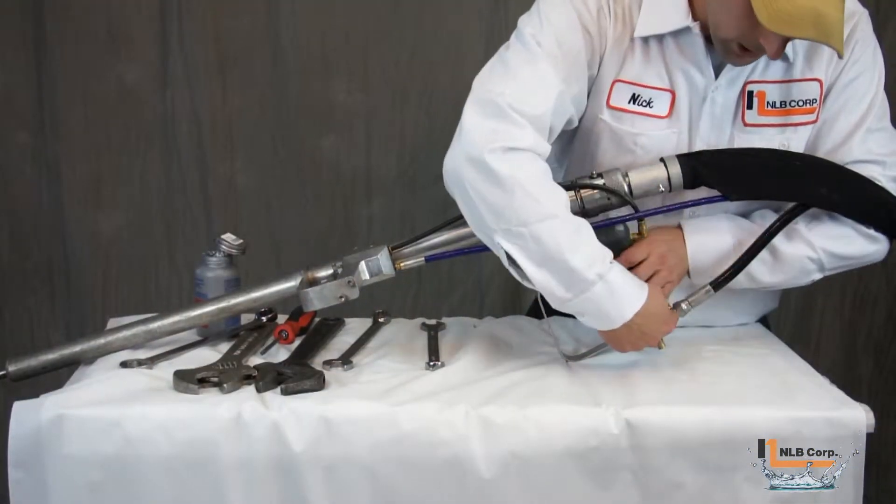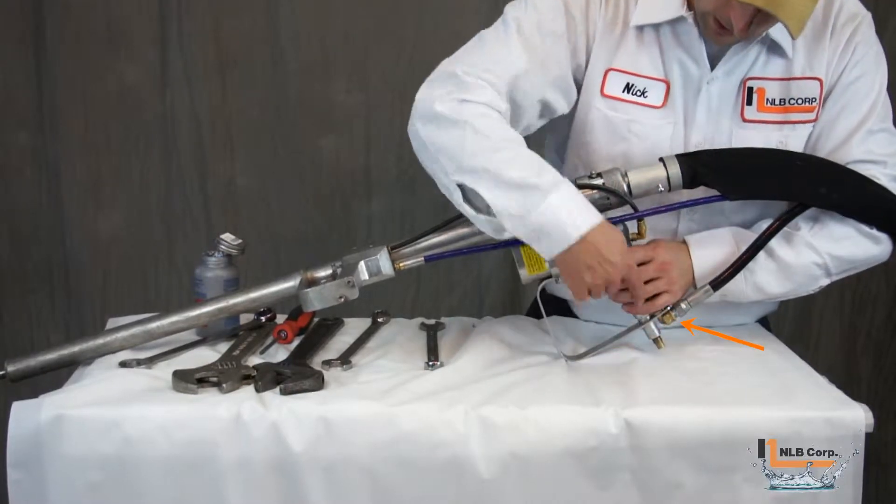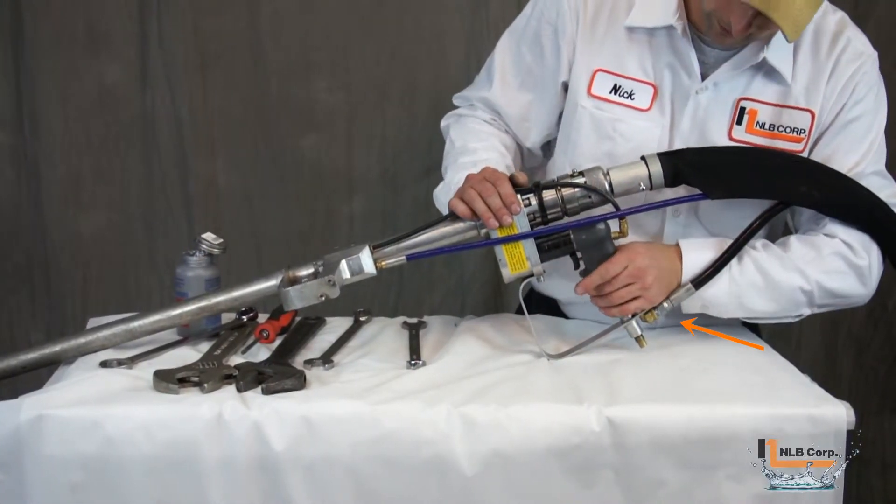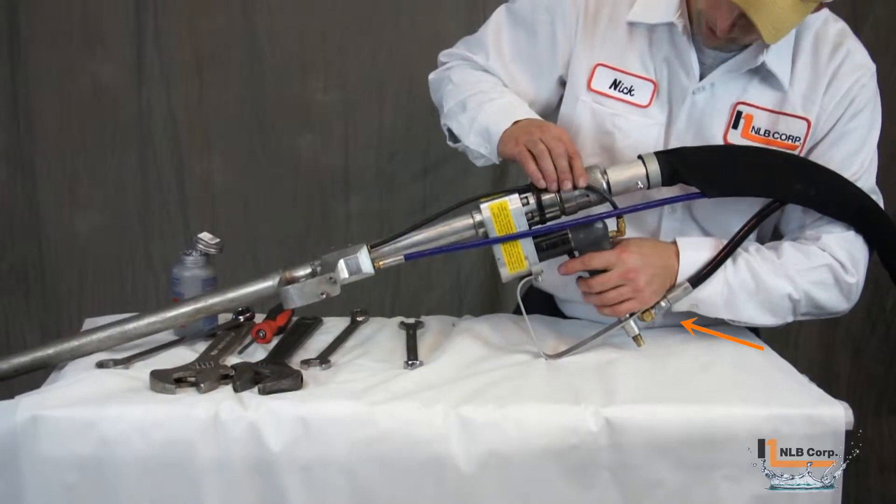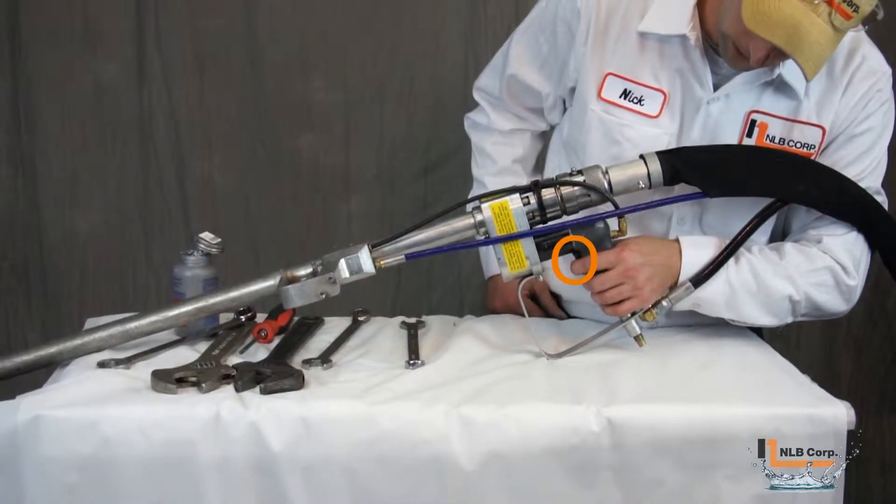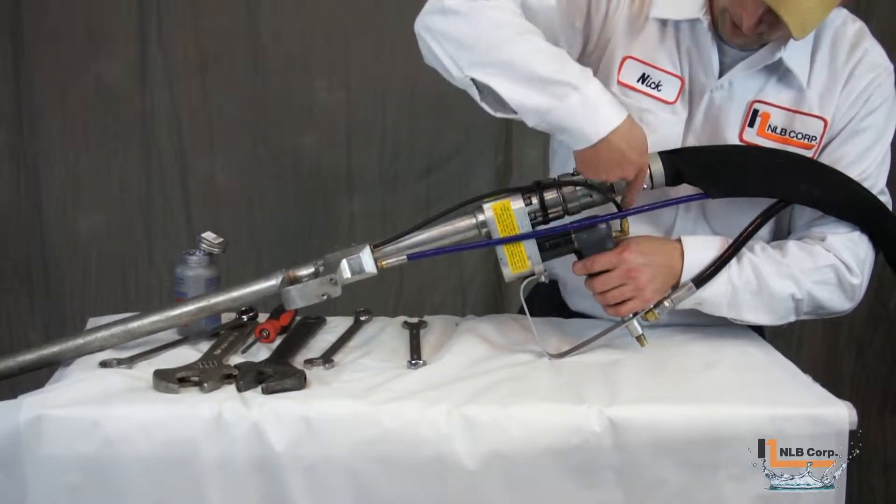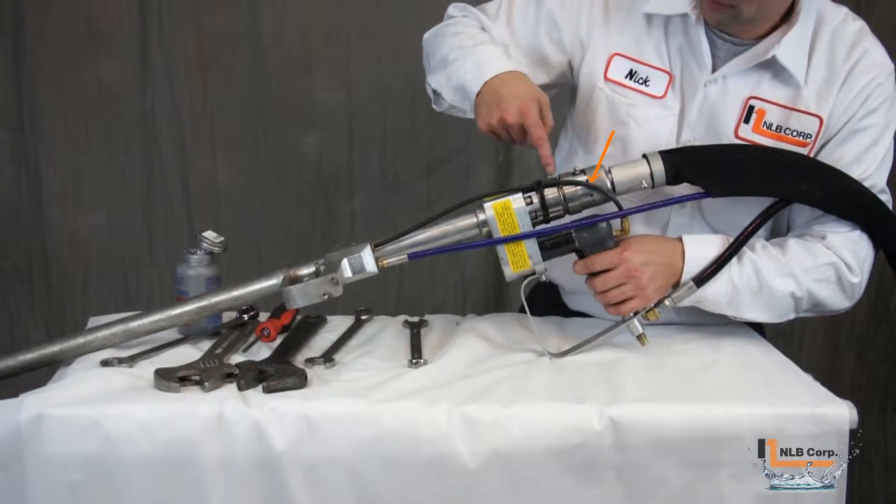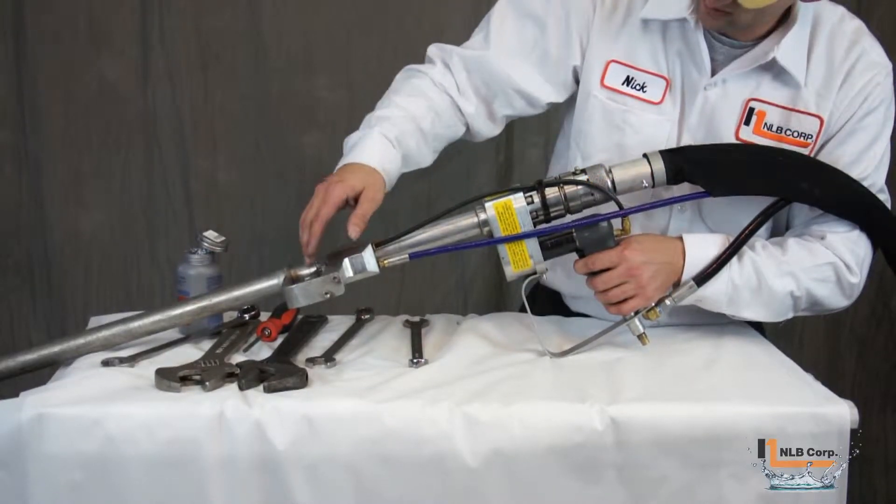...let's take a look at the path that the air takes during operation. The air comes into the hand lance via the black supply line which is attached here. When the rear trigger is depressed, the air motor begins to spin and the air is passed through to the front trigger assembly via this signal line.